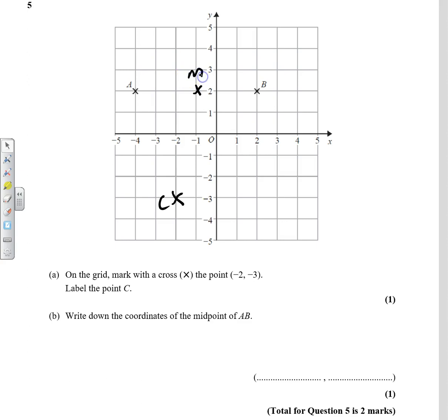But we need to actually write down the coordinates. So that is minus 1, and then we need to go up 2. So (-1, 2).